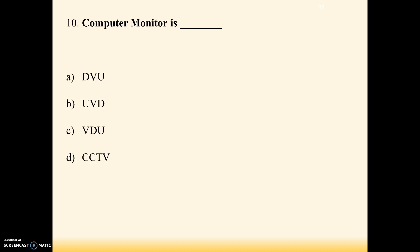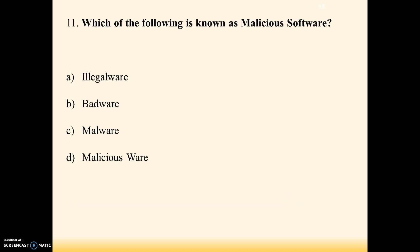Next question: a computer monitor is also a unit — which type of unit? Options are A: DUV, B: UVD, C: VDU, D: CCTV. Answer is C — VDU, that is visual display unit, because the computer monitor acts as the display to the user, meaning it is the output unit. That is why the answer is visual display unit.